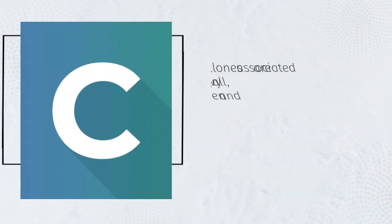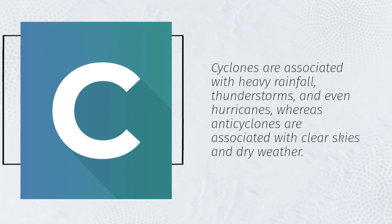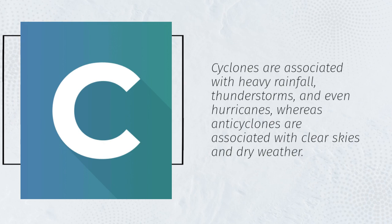Cyclones are associated with heavy rainfall, thunderstorms, and even hurricanes, whereas anticyclones are associated with clear skies and dry weather.